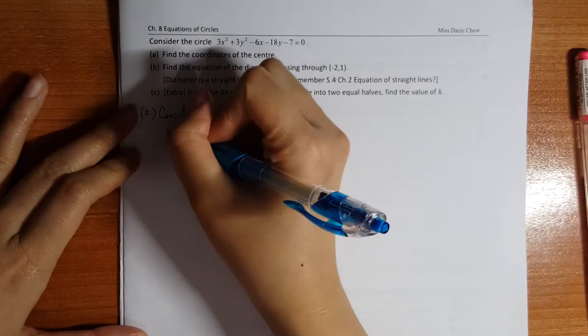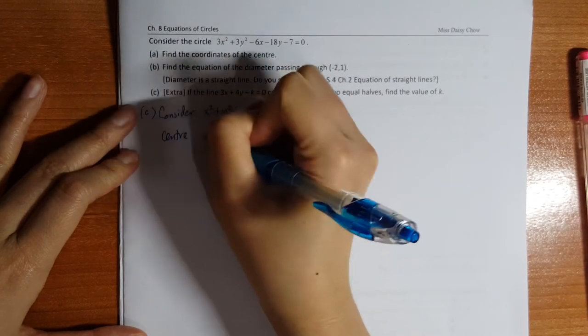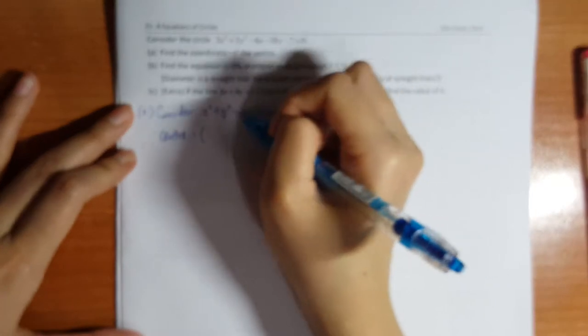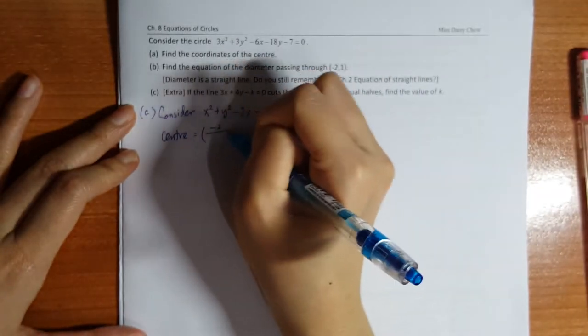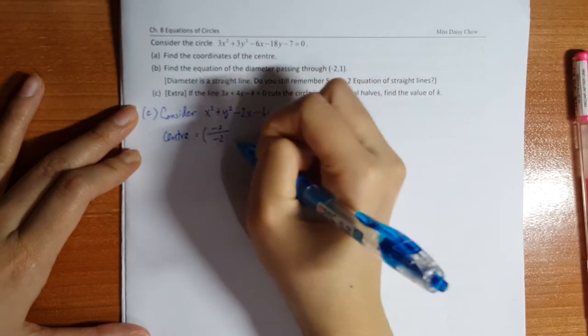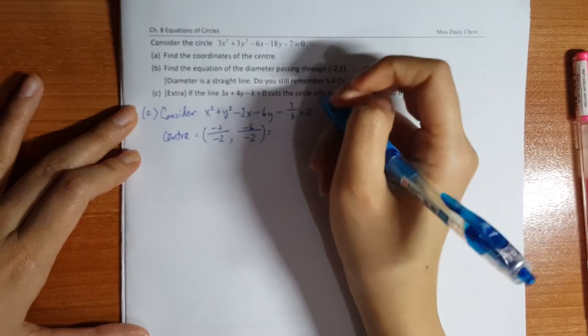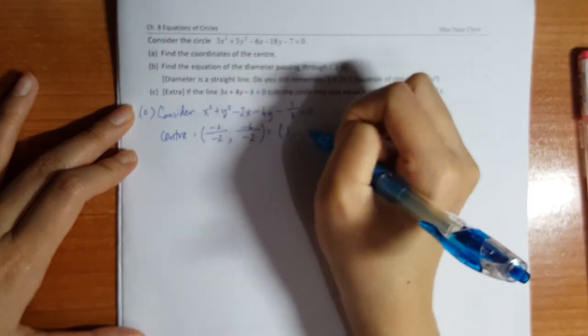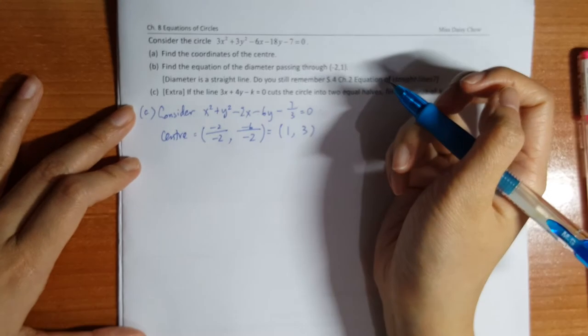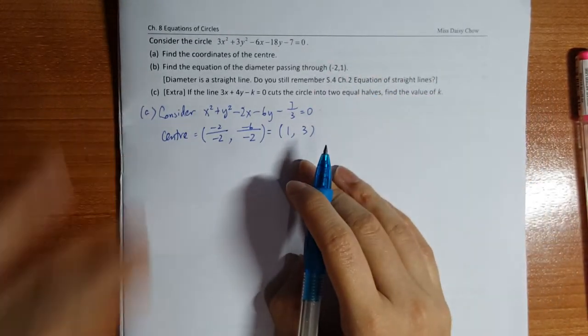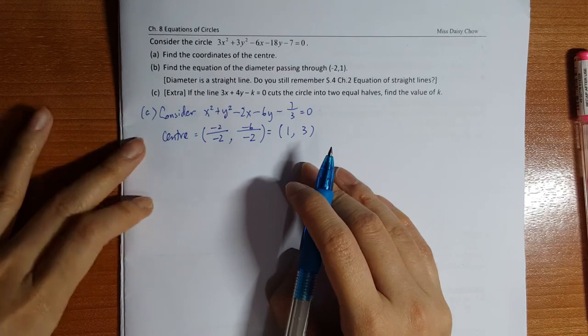And then center would be d divided by negative two, e divided by negative two. So you will get one, three. So I complete part a.